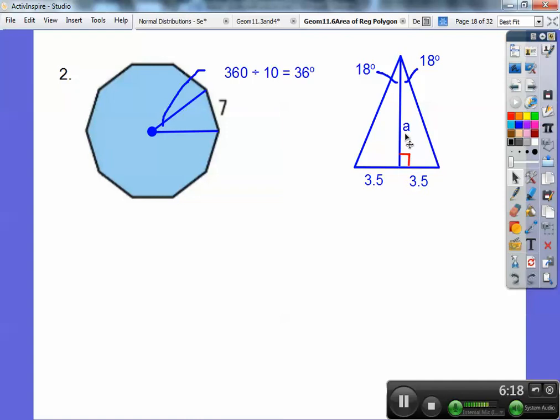So here I need to find the apothem. I'm not using a hypotenuse. So this would be a tangent ratio. The tangent of 18 is opposite over adjacent. So the tangent of 18 becomes 0.325. And then I cross multiply. 0.325 times A equals 1 times 3.5. So I divide and I get A equals 10.8. So there's the apothem. Remember the perimeter is 70.